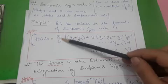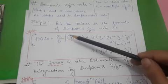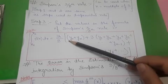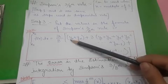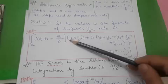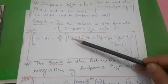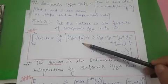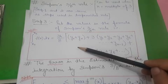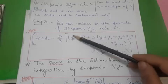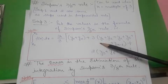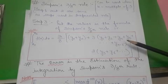The formula is: 3/8 multiplied by the equal width h, multiplied by the sum of terms. The first bracket contains y0 plus yn, where y0 is the function value at x0 (lower limit) and yn is the function value at xn (upper limit). These are the boundary terms, common across the trapezoidal rule, Simpson's 1/3 rule, and Simpson's 3/8 rule.